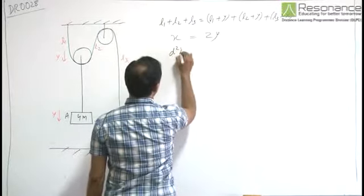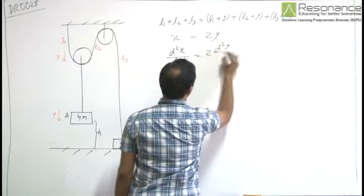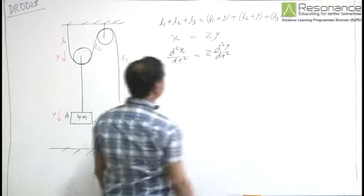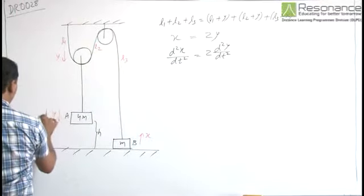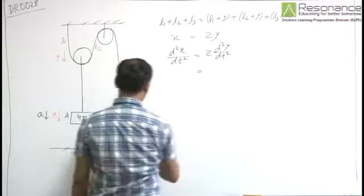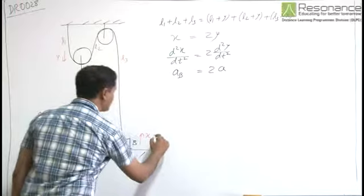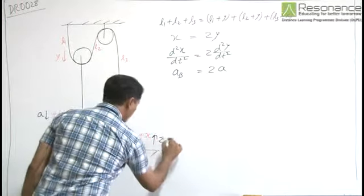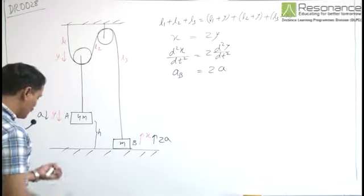That is, d2x by dt2 is equal to 2d2y by dt2. If I consider acceleration of A to be small a, then acceleration of B will be twice of acceleration of A. So B is moving upward with acceleration of 2a.